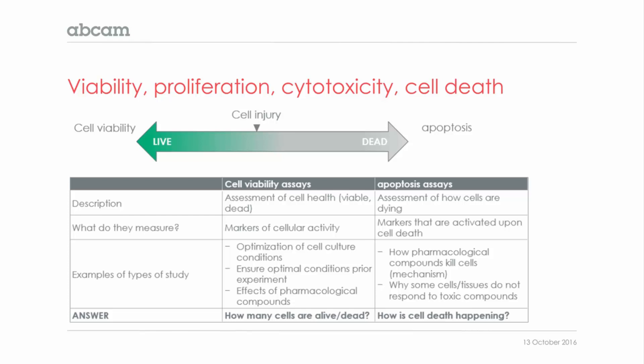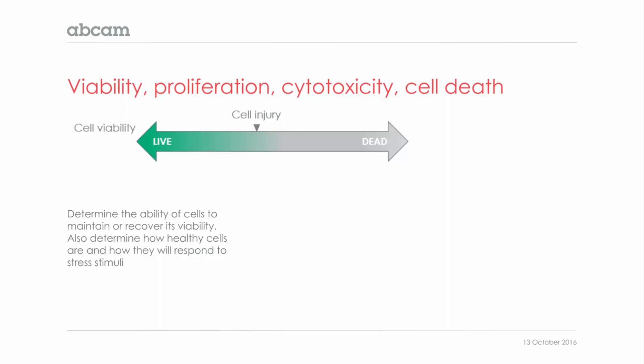When we talk about studying cell viability, we are mainly referring to the ability of a cell to maintain or recover its viability after cell injury, as well as determining how cells are before and after stress stimuli. Researchers generally use viability assays as a common name when talking about viability, proliferation, and cytotoxicity. Although these terms are very interchangeable, they refer to slightly different things.